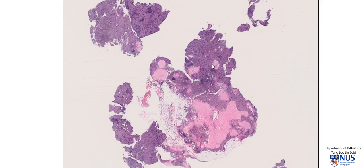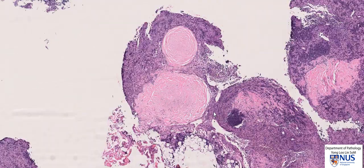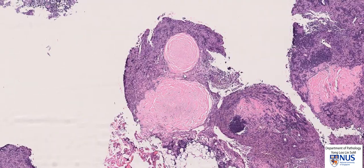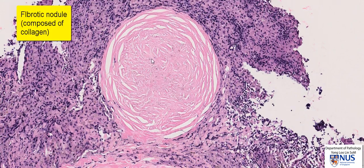The abnormal areas are these pale pinkish areas which can be rounded or somewhat more irregular. Let's zoom in on these abnormal areas. Over here I can see that there is this rounded, kind of like a fibrotic nodule. This pink material is collagen.